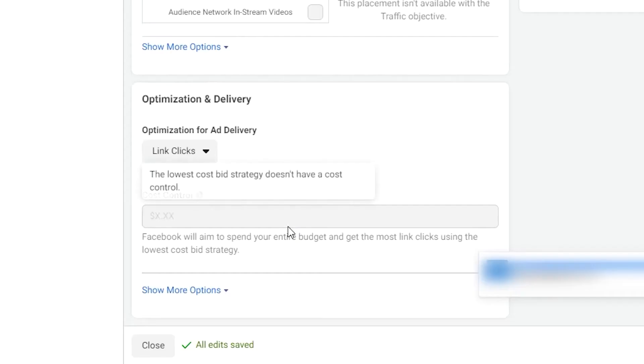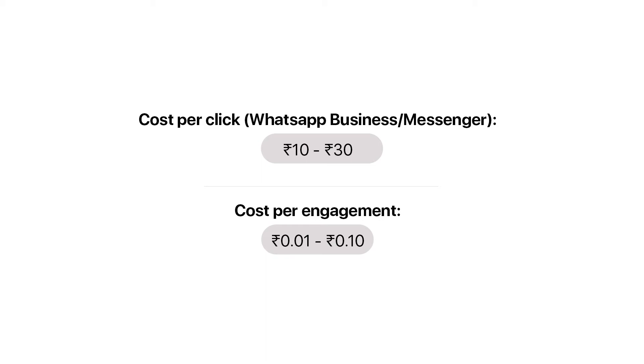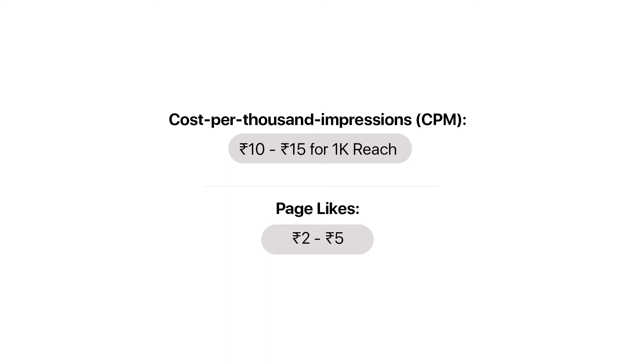Make sure you select the right placement before running your ad. Step six is cost control. I've listed the average value of the most important metrics you can use to bid in the cost control section. For example: page likes cost around 2–5 rupees, a click on WhatsApp costs around 10–30 rupees, impressions can be 10–15 rupees per thousand, and engagement can be 0.01 to 0.10 rupees per engagement.